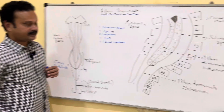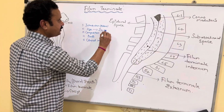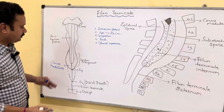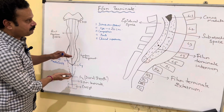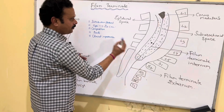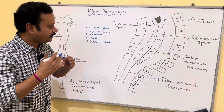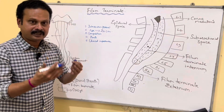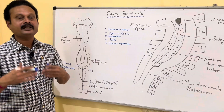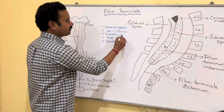In terms of size, it is around 20 centimeters, of which the proximal 15 centimeters is called the filum terminale internum, and the remaining 5 centimeters is called the filum terminale externum.